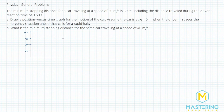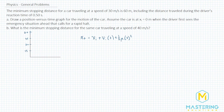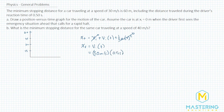First, we need to figure out how far the car went during that reaction time of half of a second. We'll use the kinematic equation: x final equals x initial plus v initial times time plus one half times acceleration times time squared. The acceleration is 0 during the reaction time, and x initial is 0, so it simplifies to velocity times time: 30 meters per second times 0.5 seconds equals 15 meters.